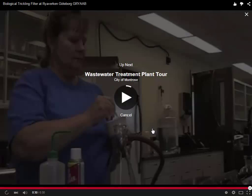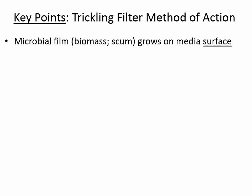Here are a few key points to emphasize. The microbial film, or biomass, is growing on the surface of the media. With each time the water is sprayed over the surface, the microbes are only taking a small fraction of the waste. In a single cycle through the trickling filter, it may only remove a small fraction. But through recirculation of the water, you can get a good overall removal.